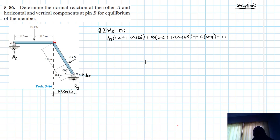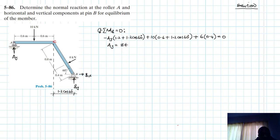Therefore, grab your calculators. A_Y equals (10 × (0.6 + 1.2 cos 16) + 6 × 0.4) divided by (1.2 + 1.2 cos 16). This gives us A_Y equal to 8 kilonewtons. We then move on to the summation of forces in the Y direction equal to zero.